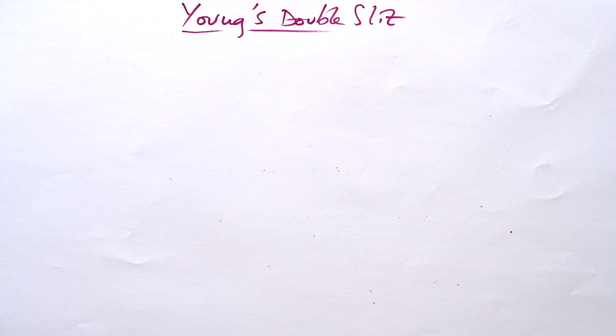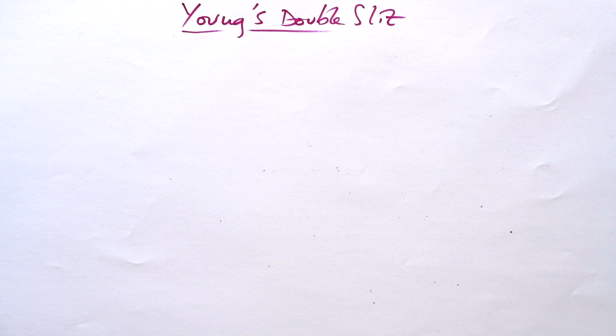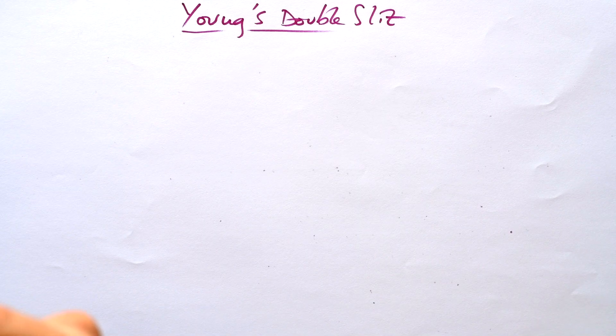This is the main experiment investigation that proves that light acts like a wave. This is Young's double slit and you're probably going to do this as an experiment but it might come up in an exam as well.